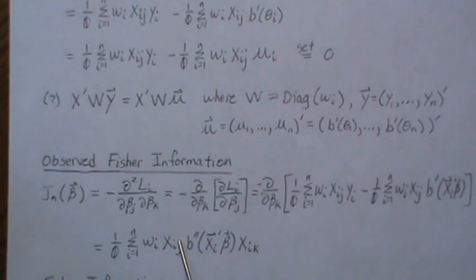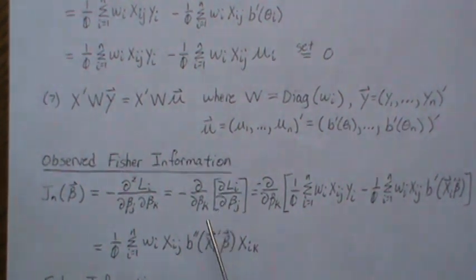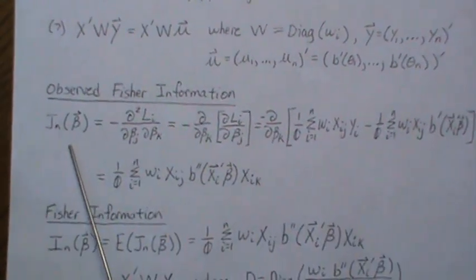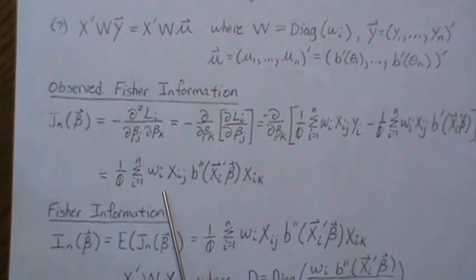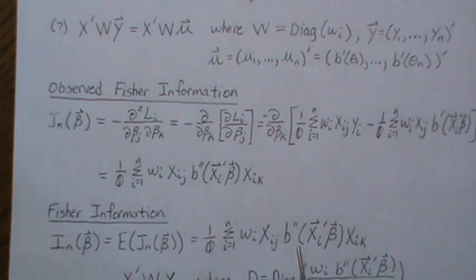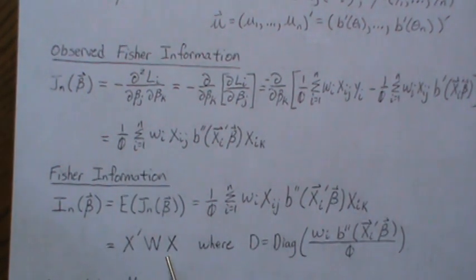The Fisher information is the expected value of the observed information J. Since there are no y's in this expression, it is already a constant, so the Fisher information equals J directly. This can also be represented in matrix form as X-transpose times D times X, where D is a diagonal weight matrix.